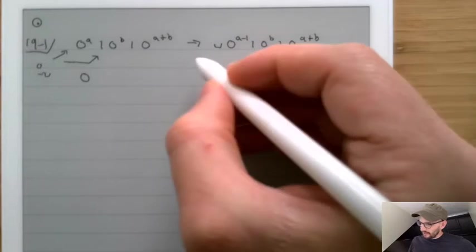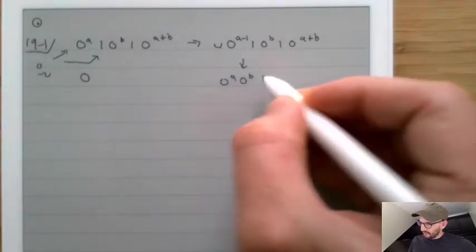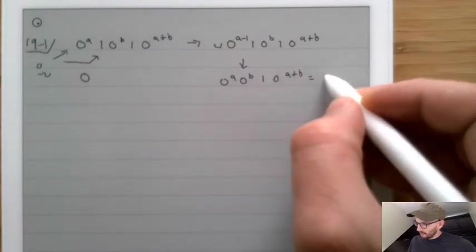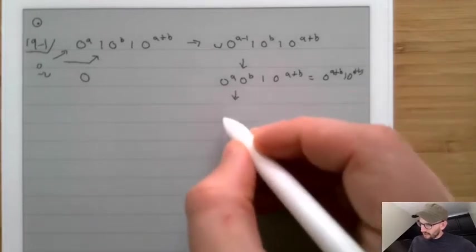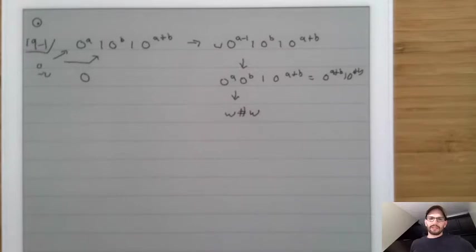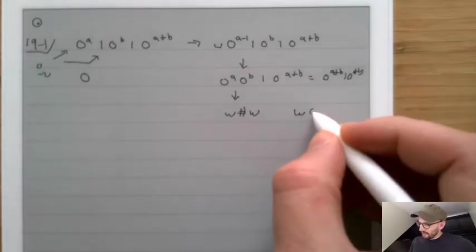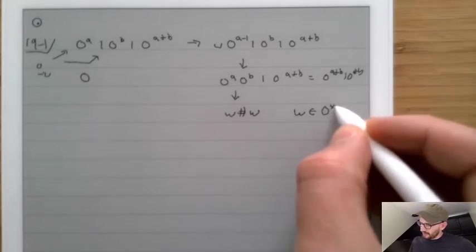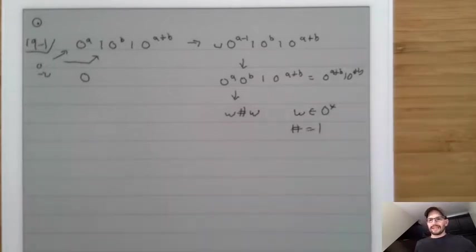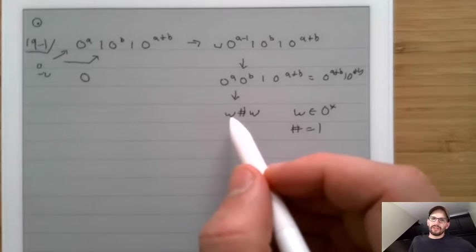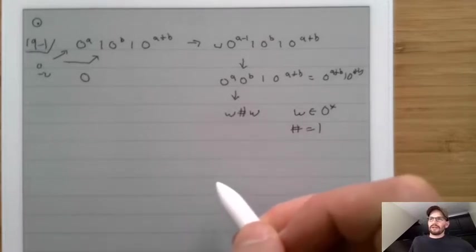Then you're going to turn that 1 into a 0, so you get 0 to the a, 0 to the b, 1, 0 to the a plus b — which equals 0 to the a plus b, 1, 0 to the a plus b. Then you just check to make sure that this matches w hash w, except it's a variant where w comes from 0 star and the hash equals 1. You see that that's a 0; if it is, you go find the hash and turn the thing on the other side to a happy face.